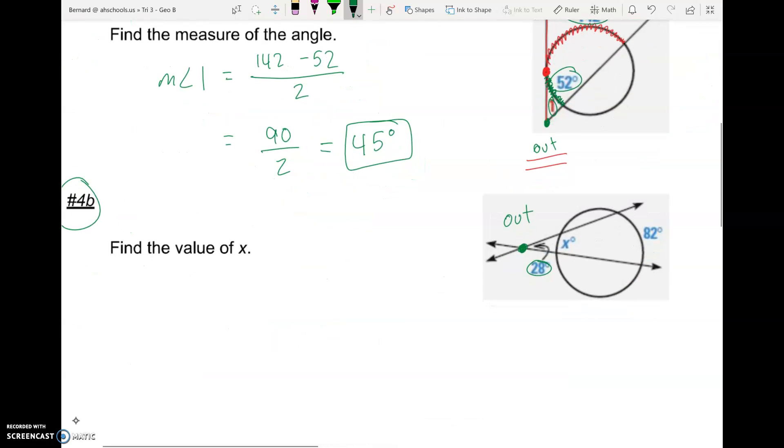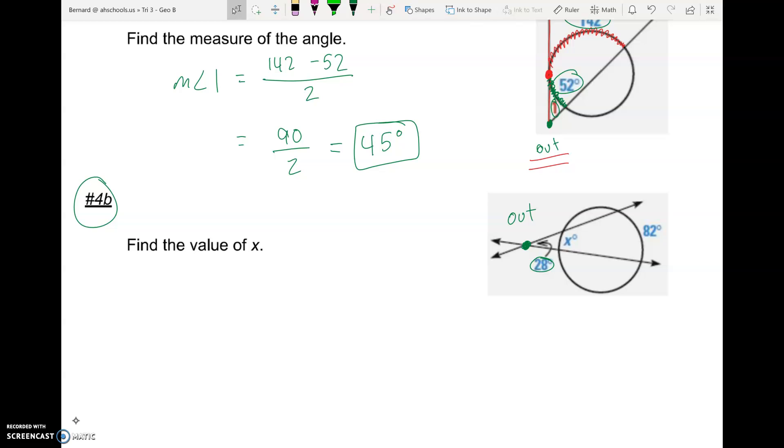And so let's figure out those arcs we're working with. The one that's farther away, in between our two angle sides, that's 82. The one that's closest in between the two angle sides is x. And then again, we know our angle. And it's always angle equals arc minus arc divided by 2. So 28 equals 82 minus x divided by 2.